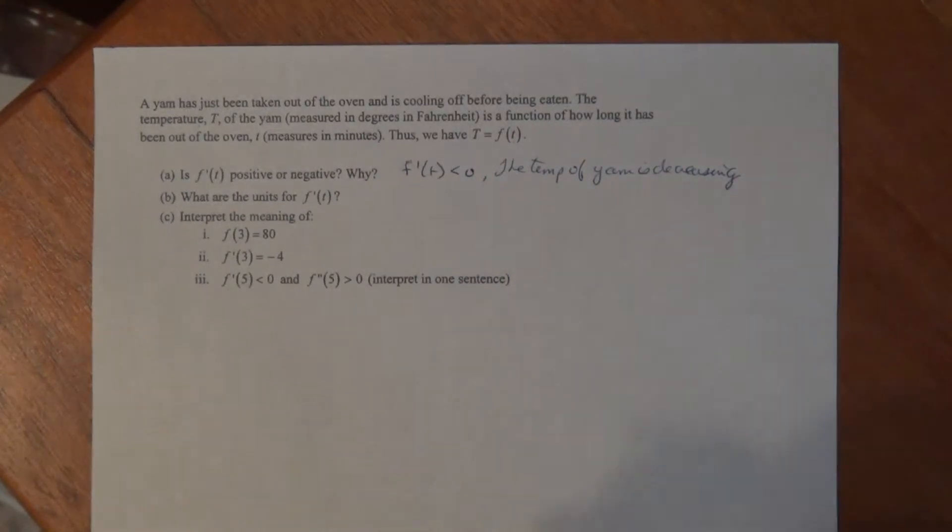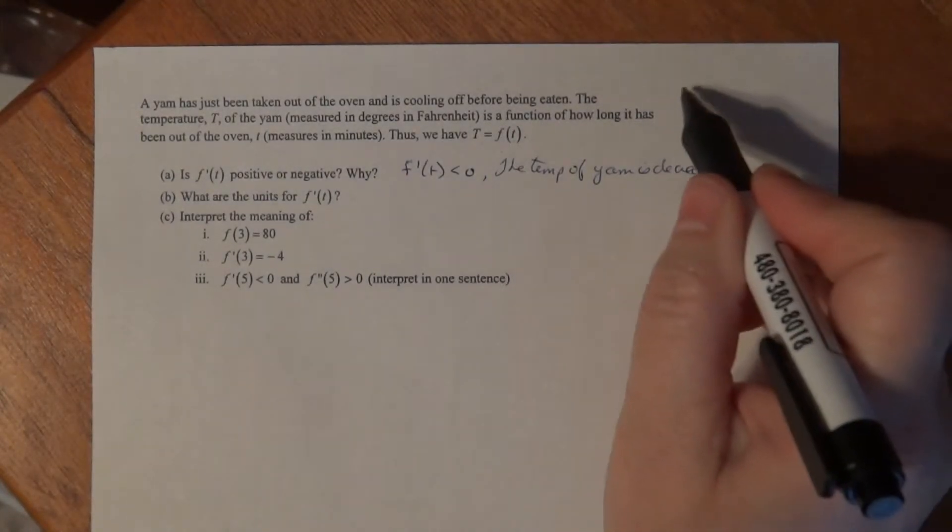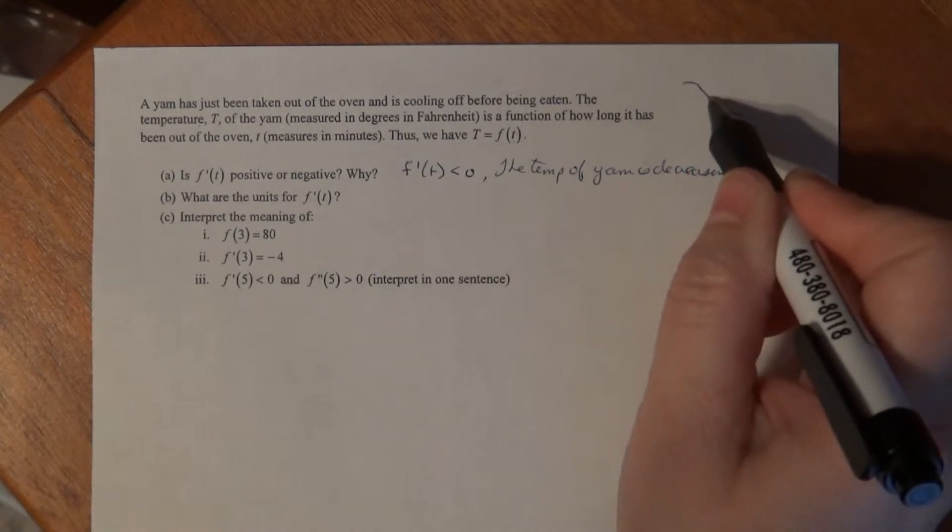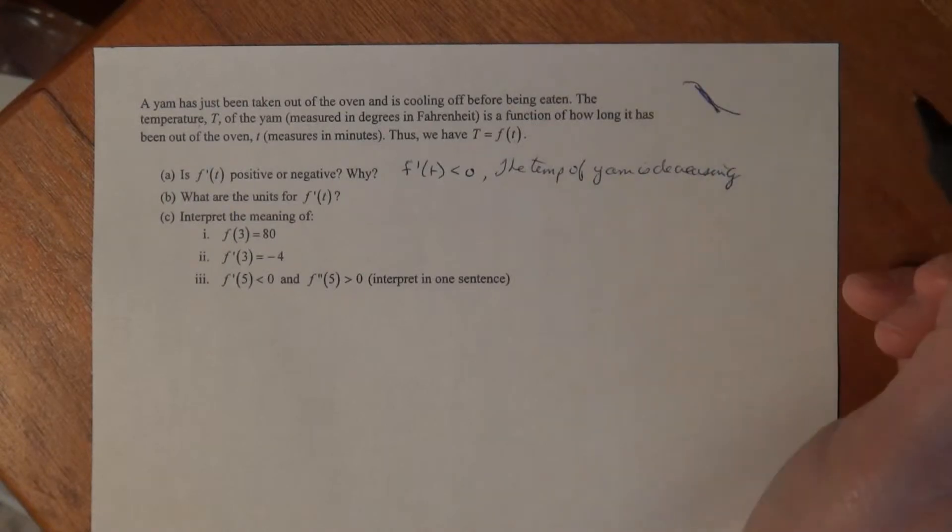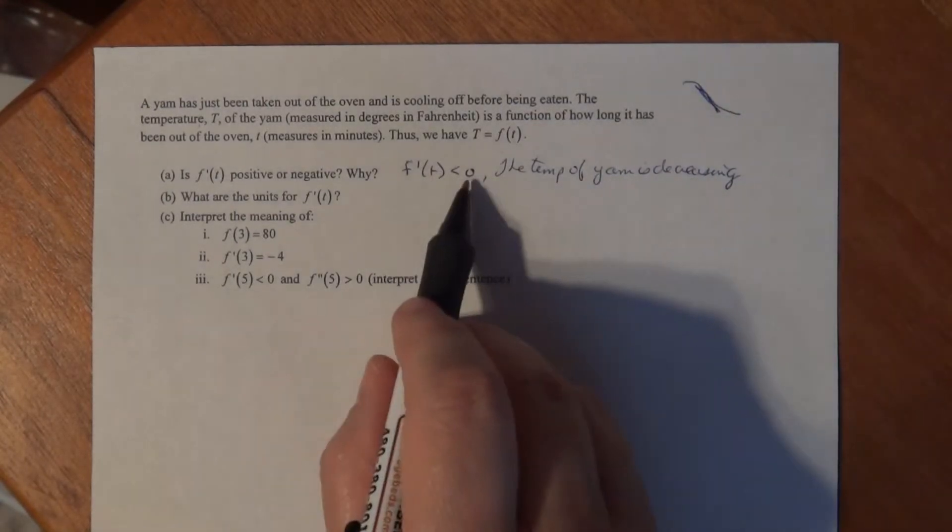Any time a function is decreasing, let's draw a little picture of a decreasing function. You take any tangent line at any point and you can see that the slope of that tangent line is negative. So that means F prime is negative.